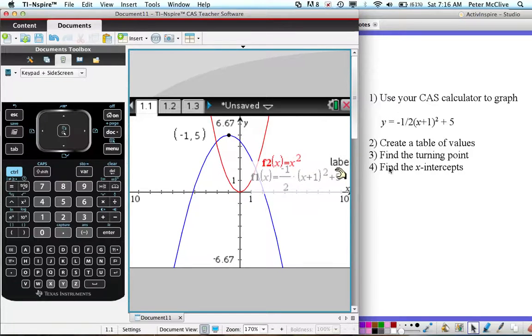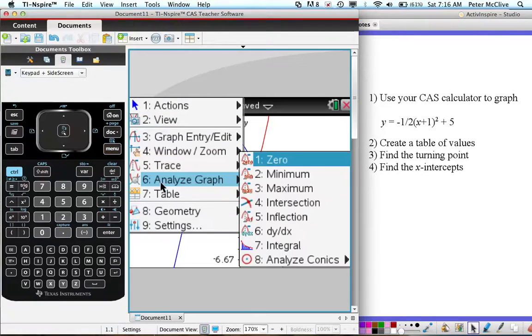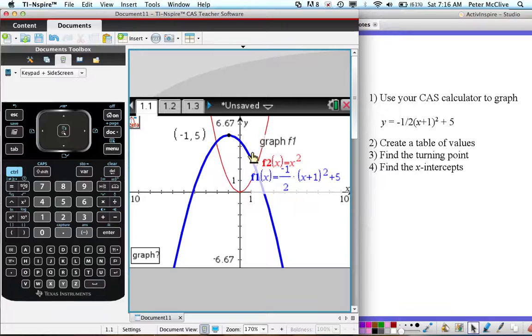Now number 4, find the x-intercepts. Again on the menu, analyze graph number 6, but we want to find points where the graph y equals 0, which is the definition of the intercept. So I say 0, it's asking me down the bottom which graph, I'll say f1.